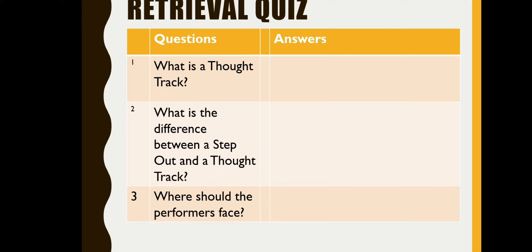Retrieval quiz is on the board as you can see. Question one: what is the thought track? Two: what is the difference between a step out and a thought track? And question three: where should the performers face? Remember to write in full sentences and using key terminology. If you wish, you can look at your knowledge organisers but remember to put your answer in your own words. Your teacher will pause the video here for you to carry out your retrieval practice.